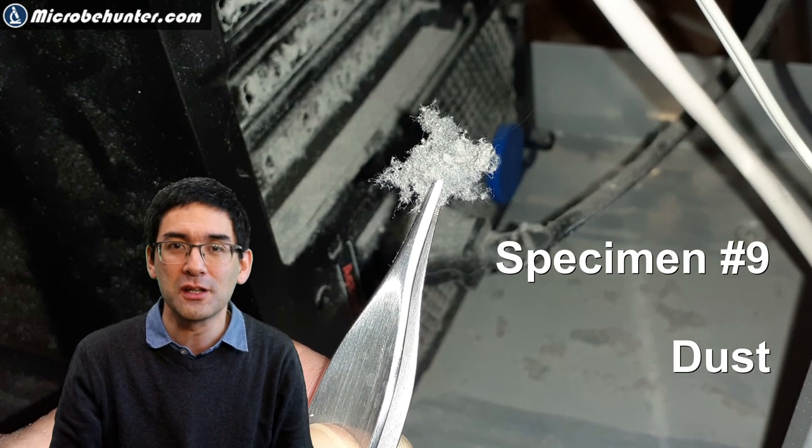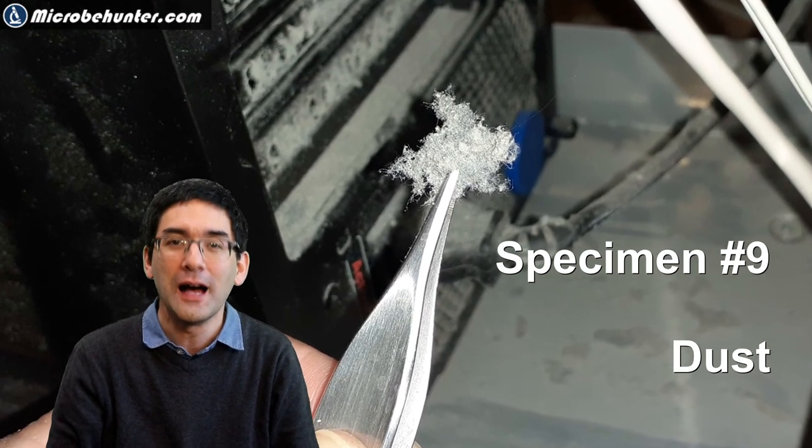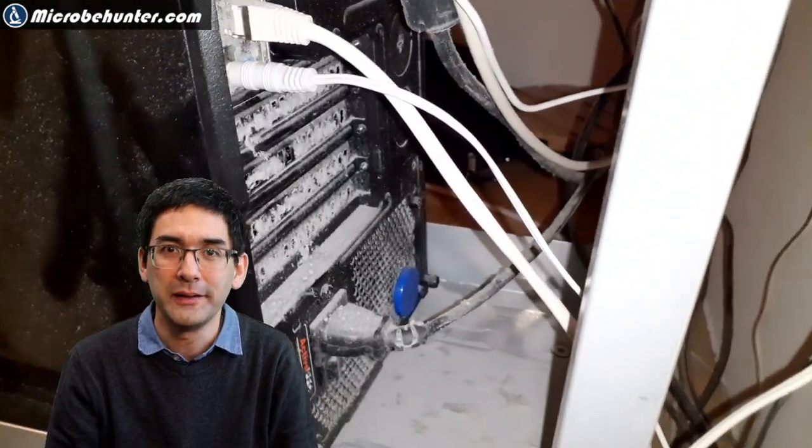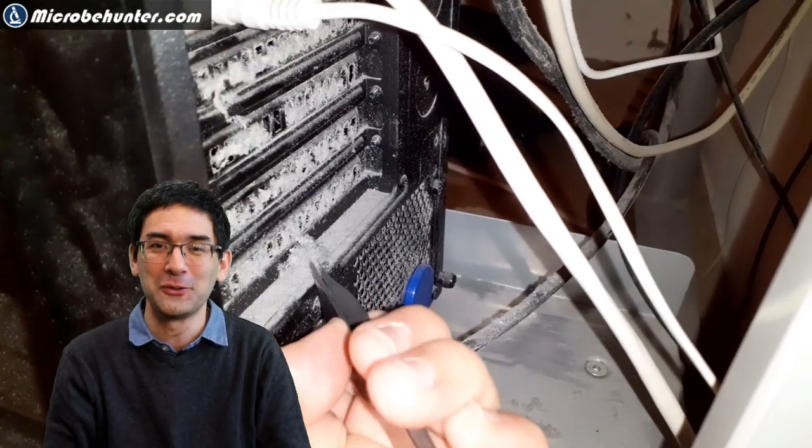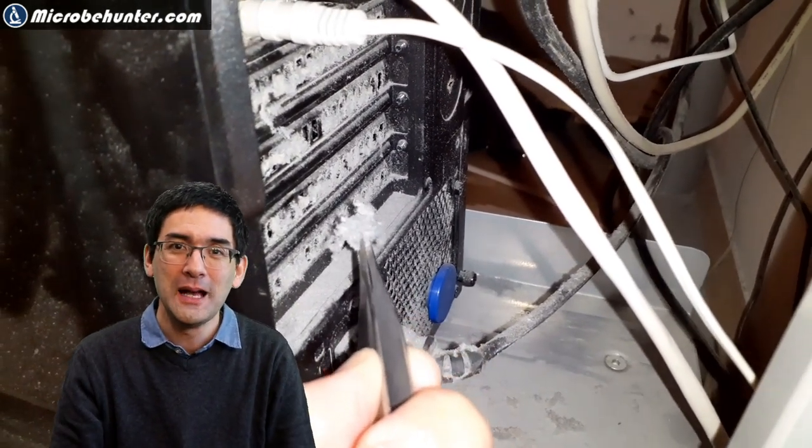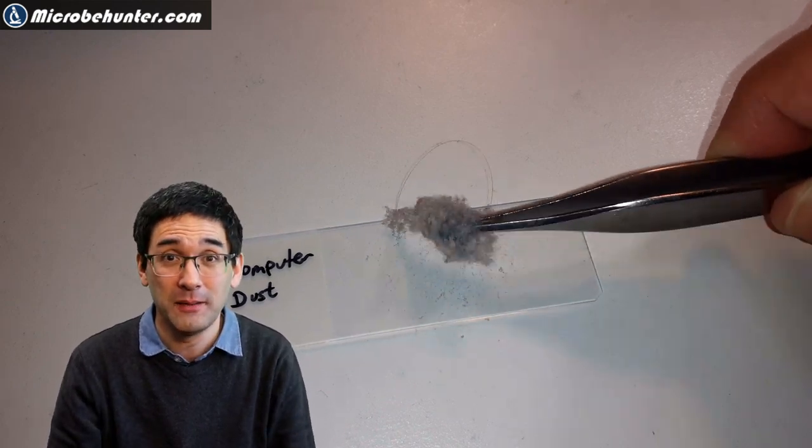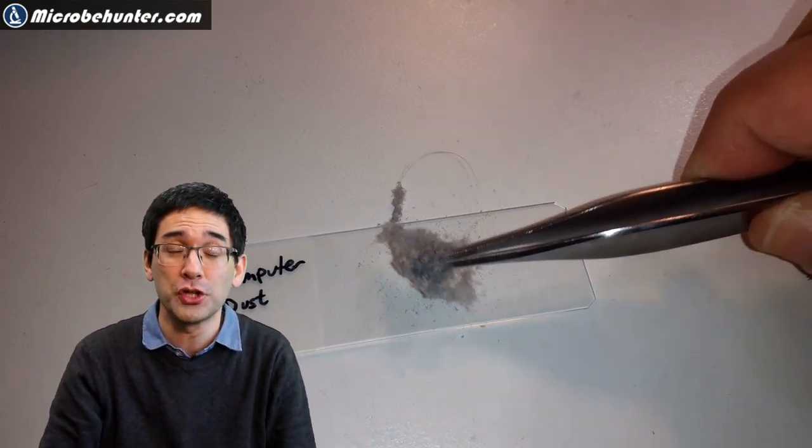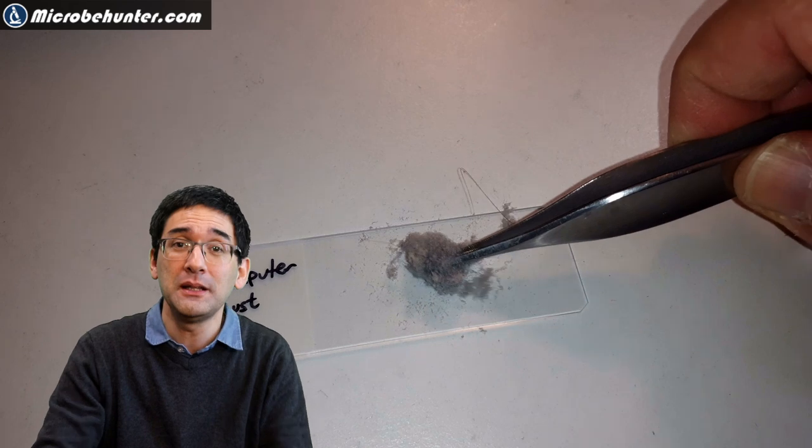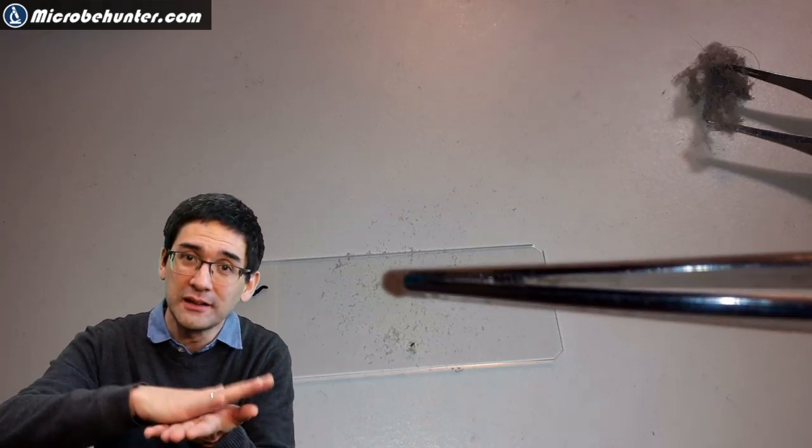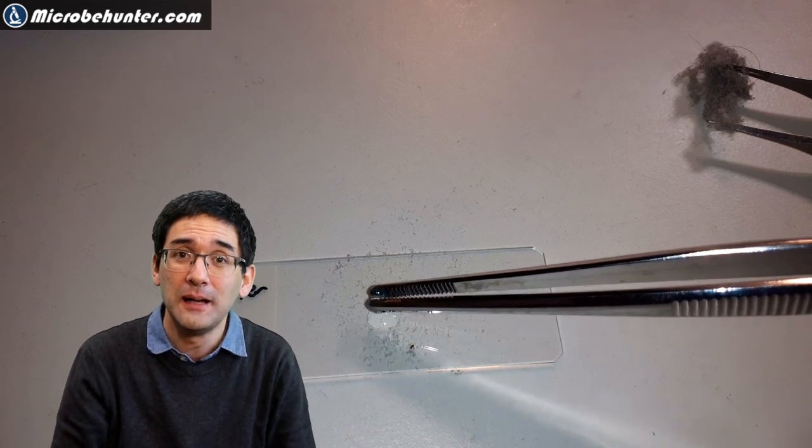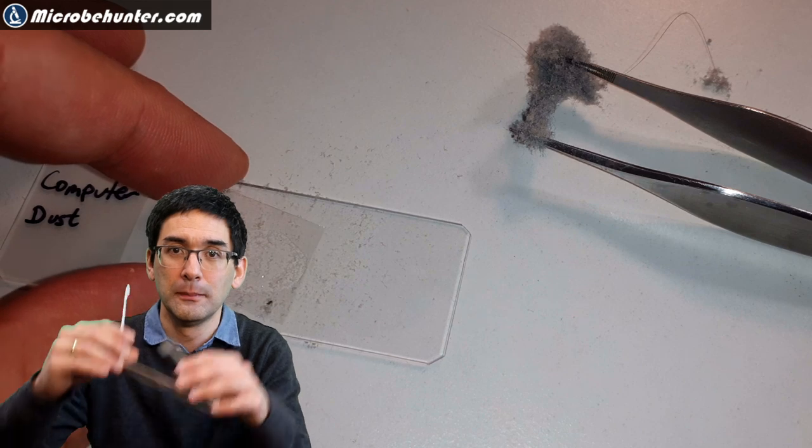Specimen number nine, dust. Where do you get dust from? Dust is everywhere. I found a lot of dust behind my computer. I think I should vacuum this because it's also not good for the computer to have so much dirt and dust there. What I did is I tapped it, because otherwise it would be way too much. I tapped it, I put a little bit of water on top of it to connect it with the cover glass, and everything went under the microscope.